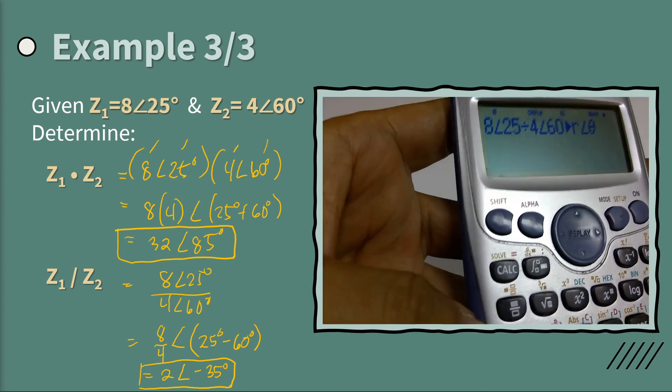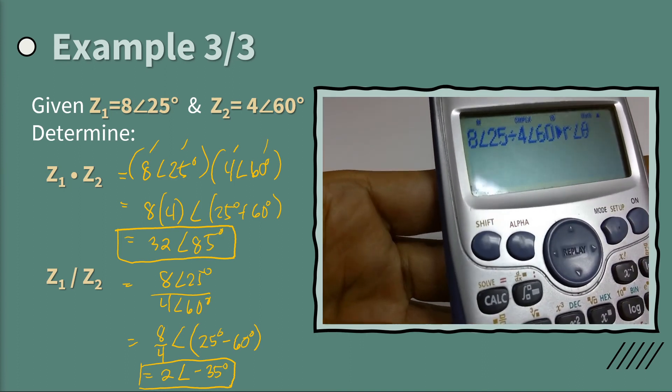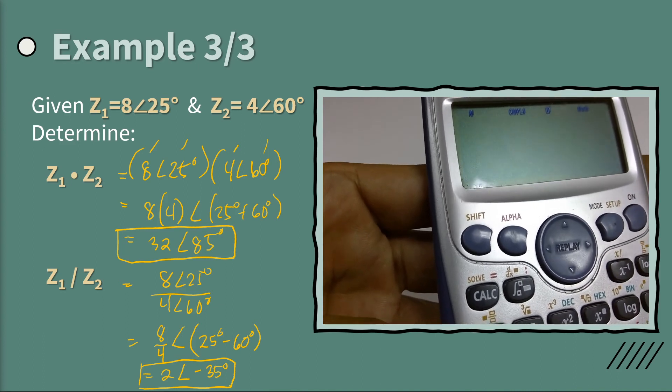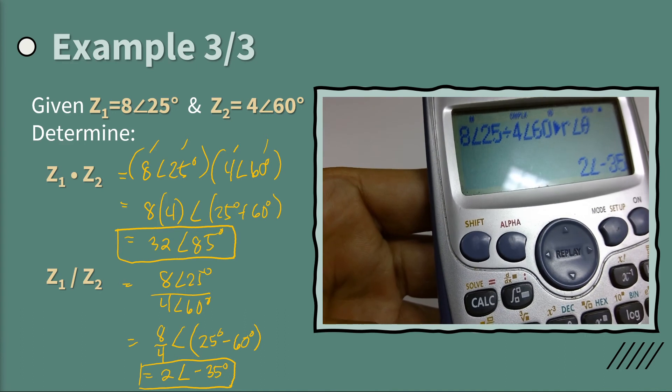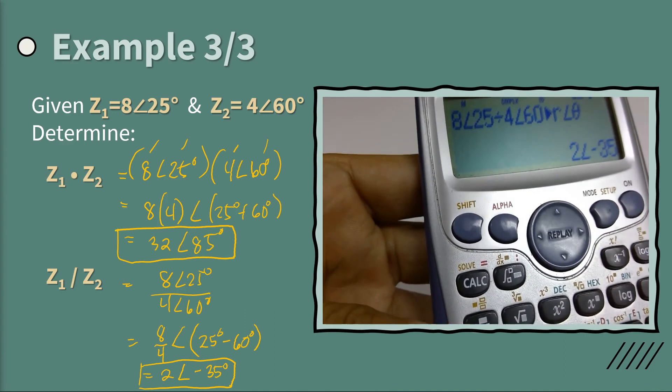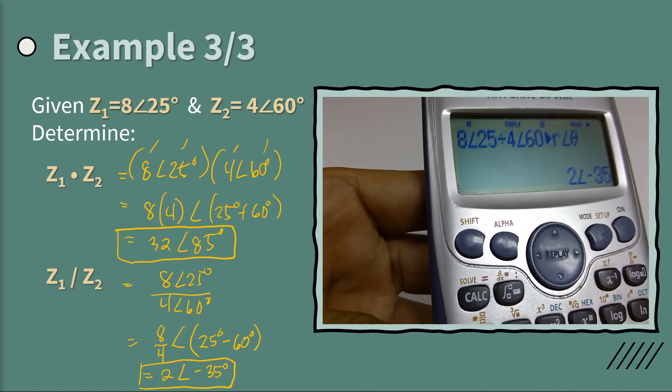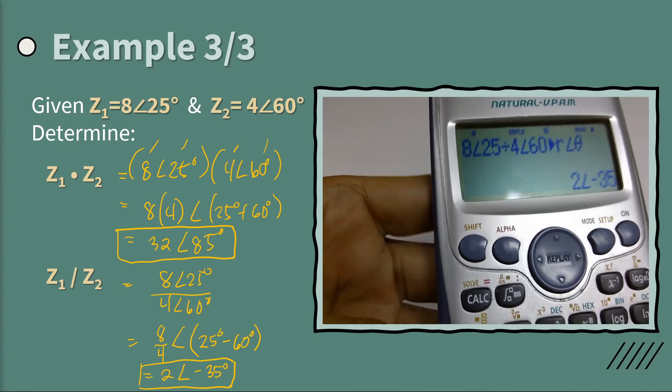So we made the wrong... We interchanged the numerator and denominator. So now it is correct. Then we press again this one. Then you get the correct answer. So we have verified our manual with the calculator technique.